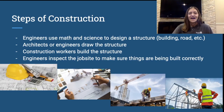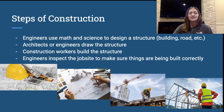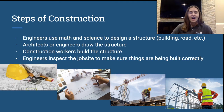You might be wondering how engineers, architects, and construction workers all work together. Here's a list of the steps of construction. First, engineers use math and science to design a structure — as civil engineers, we use those skills to design the structure. Then we work with architects to actually draw the structure, getting it down on paper or on the computer, so we can then give it to construction workers to build.